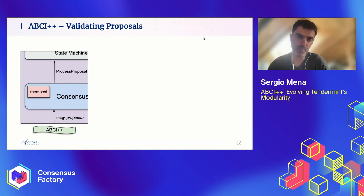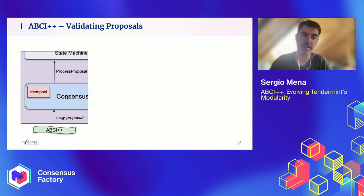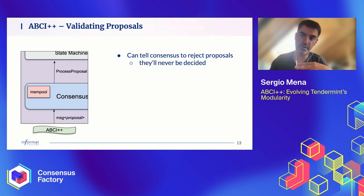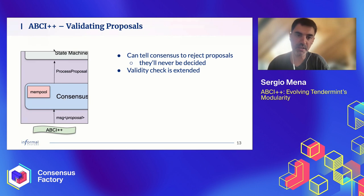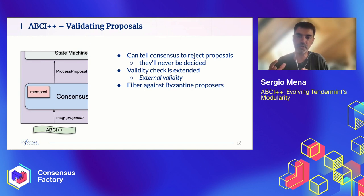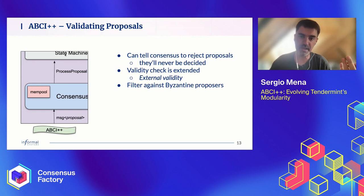There is a second part of the proposal API: ProcessProposal. Whenever a proposal is received by consensus, before in ABCI it was just dealt with internally. Now we are exposing that proposal to the state machine so that the state machine can tell consensus to reject the proposal if it deems the transactions invalid. The guarantee we offer is that if the application tells us to reject a proposal, it will never make it to decision — another proposal will be decided. The validity check that used to exist only at consensus level is now extended to the application level as well. This is why we call it external validity.